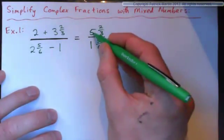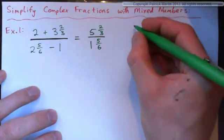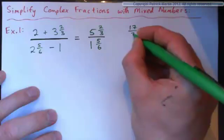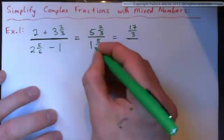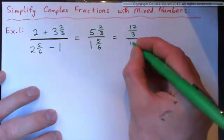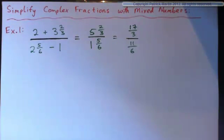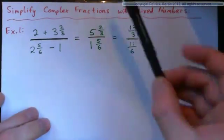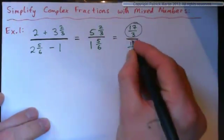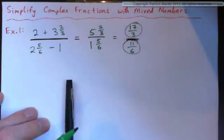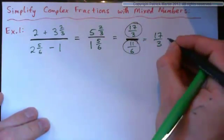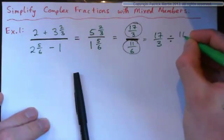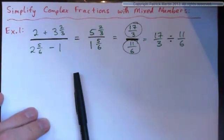Let's try converting to improper fractions. 3 times 5 is 15, and 15 plus 2 is 17 — so that's 17 thirds. And for the denominator: 6 times 1 is 6, and 6 plus 5 is 11, so that's 11 sixths. So it's equal to 17 thirds over 11 sixths. I think we know how to do this!